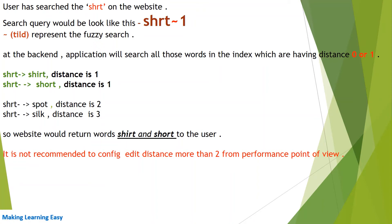This query is telling the engine to find all those words from the data which have a distance of 0 or 1 against the term 'shrt'. Distance 0 means the search term and the indexed term are matching exactly. Looking at the distances of 'shrt' against the words in the index: shirt has distance 1, short has distance 1, spot has distance 2, and silk has distance 3.